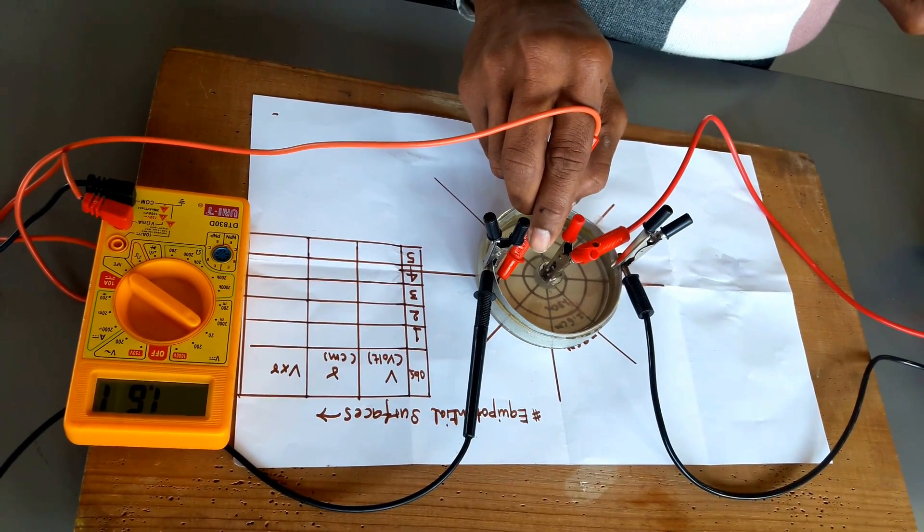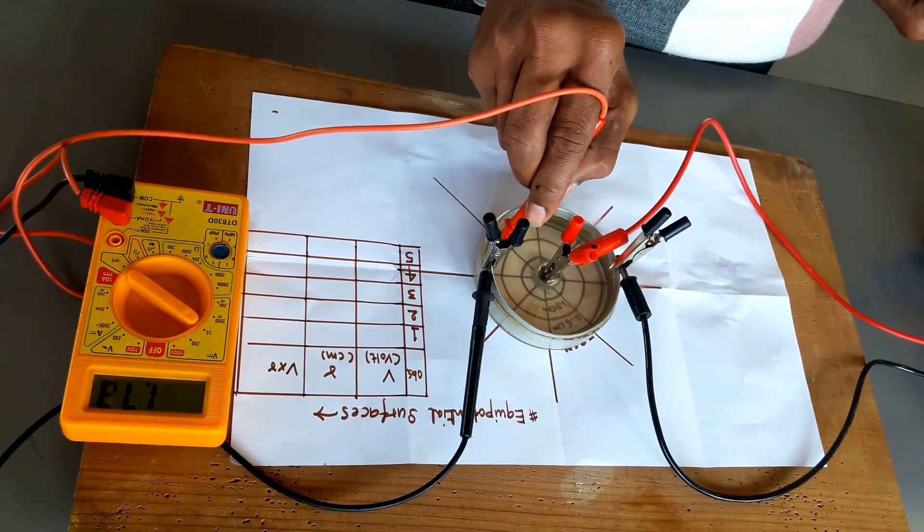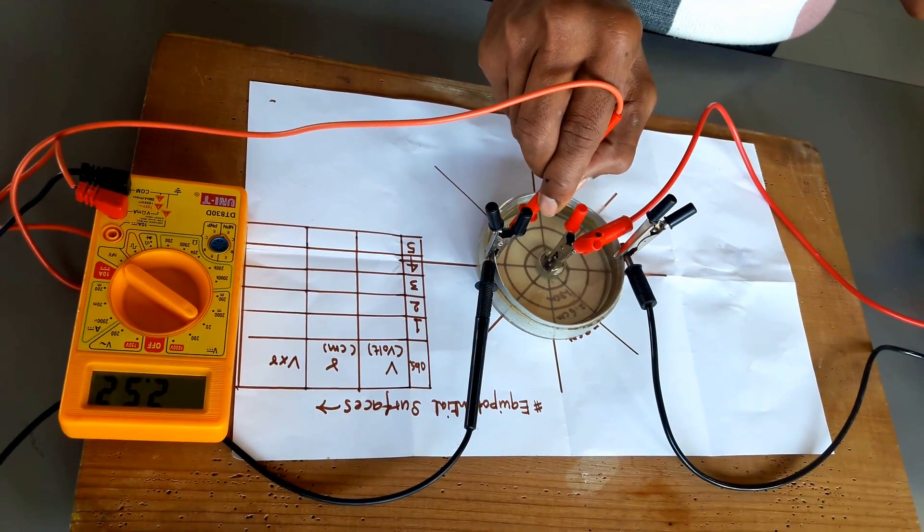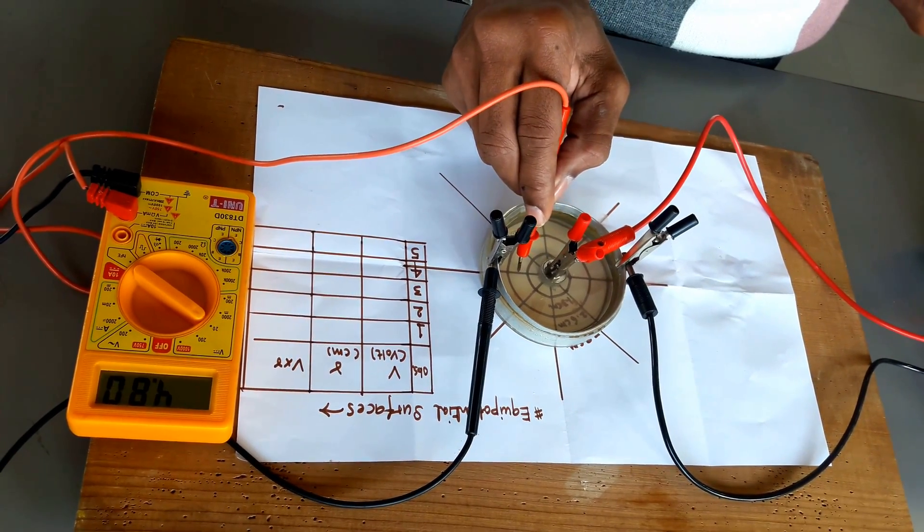Nevertheless, if you are on the circle, the voltage or potential is remaining constant. So these circular surfaces are equipotential surfaces. See, the potential is reducing.